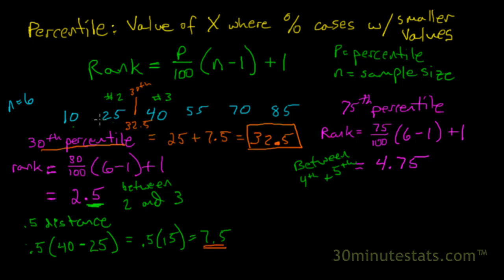This is going to be between the 4th and 5th observation. What we're looking for here is 1, 2, 3, 4, something between here and between here. We know that this is going to be the 75th percentile, somewhere in there. To be more specific, it's 0.75 or 3 quarters of the distance between 55 and 70.